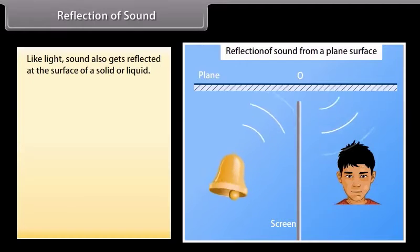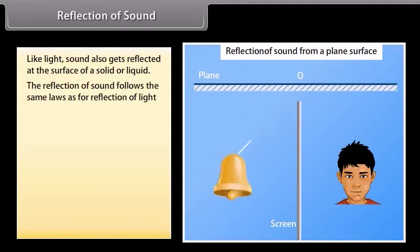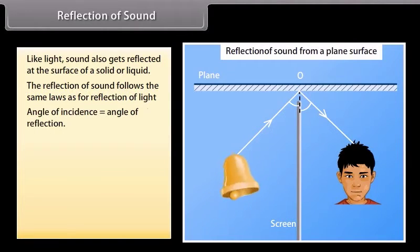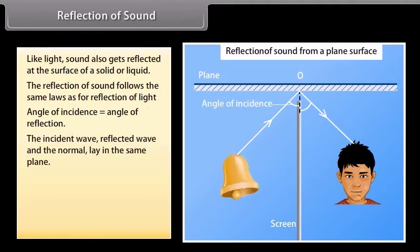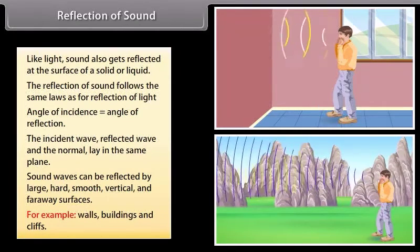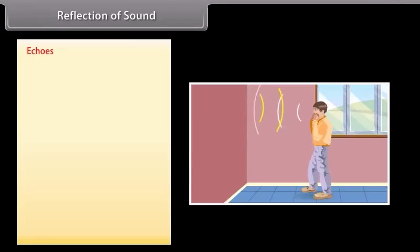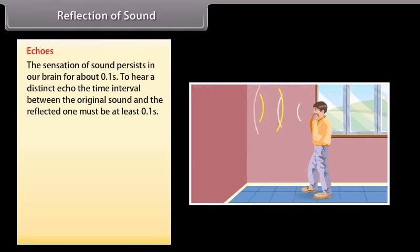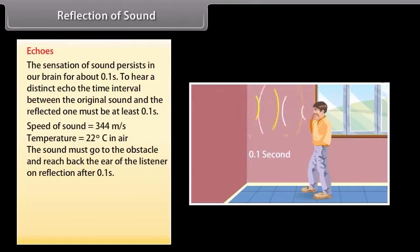Reflection of sound. Like light, sound also gets reflected at the surface of a solid or liquid. The reflection of sound follows the same laws as for reflection of light. Angle of incidence is equal to the angle of reflection. The incident wave, reflected wave, and the normal lie in the same plane. Sound waves can be reflected by large, hard, smooth, vertical and far away surfaces. Examples: walls, buildings and cliffs.